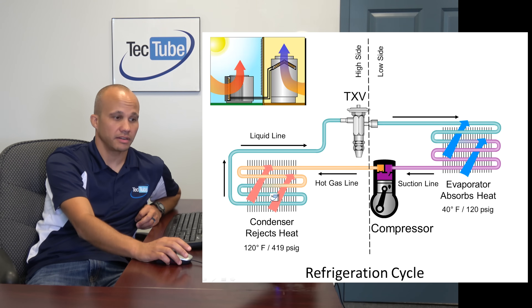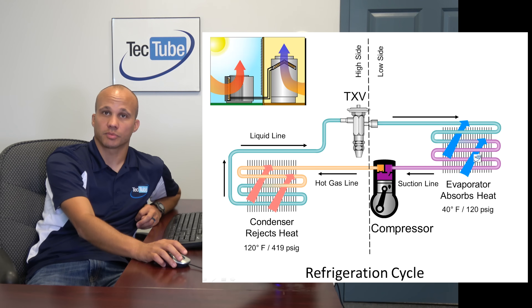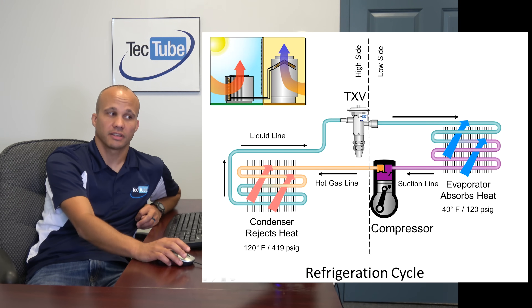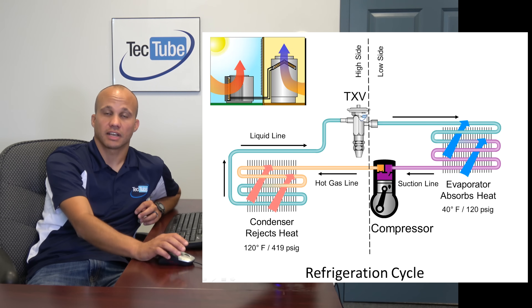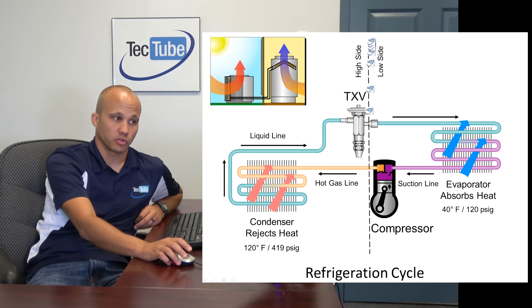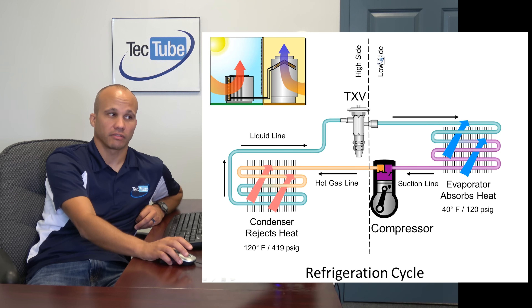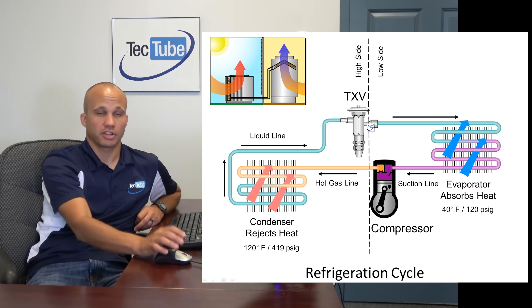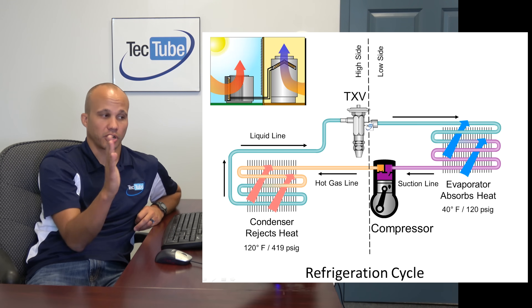The condenser coil rejects heat; the evaporator coil absorbs the heat. The compressor compresses the refrigerant, and expansion valves — or metering devices — allow that refrigerant to return to a lower pressure. On the left side of my dotted line I have high pressure, and on the right side I have low pressure. So the TXV and the compressor divide those pressure barriers.